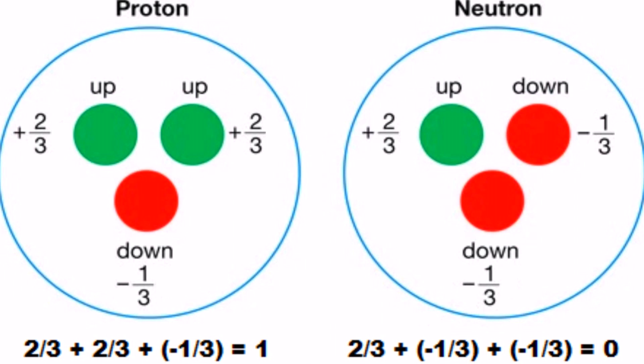And 2/3 + (-1/3) + (-1/3) = 0 for the neutron. This is how you would explain why protons have a plus one charge and why neutrons have no charge by doing some simple mathematics with knowledge of two kinds of quarks and their fractional charges. Now watch this.